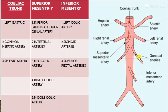The celiac trunk gives three branches: left gastric artery, common hepatic artery, and splenic artery. The superior mesenteric artery gives five major arteries: inferior pancreaticoduodenal artery, intestinal arteries, ileocolic artery, right colic artery, and middle colic artery. The inferior mesenteric artery gives the left colic artery, sigmoid arteries, and superior rectal arteries.